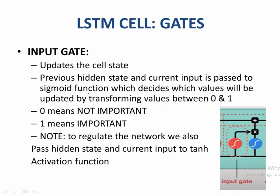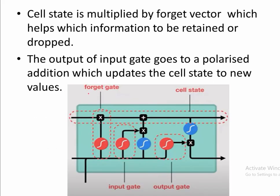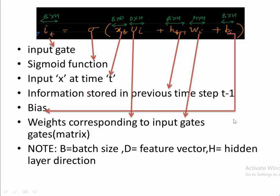The second gate is the input gate, which again uses a sigmoid function squishing values between 0 and 1 — where 0 means not important and 1 means important data. The hidden state and current input are also passed to a tanh function to regulate the network. The tanh output is multiplied with the sigmoid output to decide which information from the tanh output must be retained or discarded. Then the forget gate and input gate outputs are added together to form the cell state — the memory of the cell.